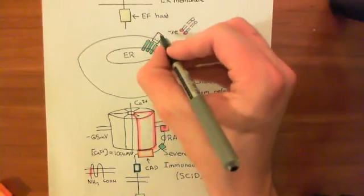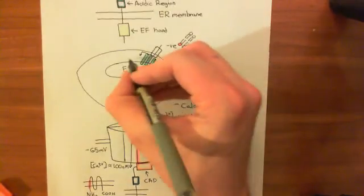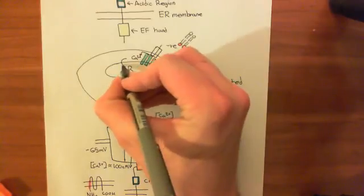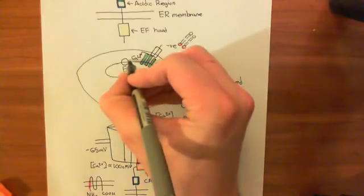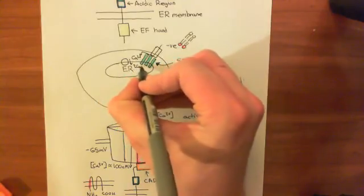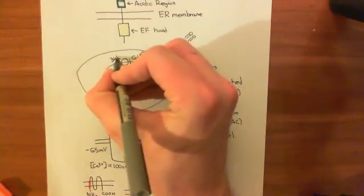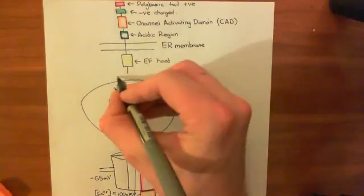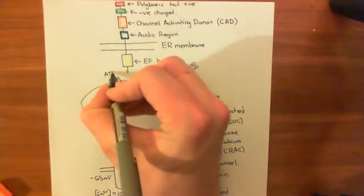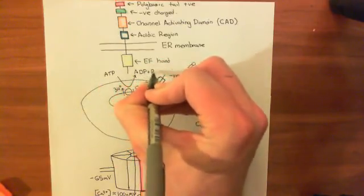So you have both the concentration gradient and the electrical gradient favouring calcium movement in when you open this channel. Calcium moves from the extracellular compartment into the cytoplasm, and then the SERCA pump moves two calcium ions into the ER for three protons out, hydrolysing ATP to ADP and inorganic phosphate in that reaction.